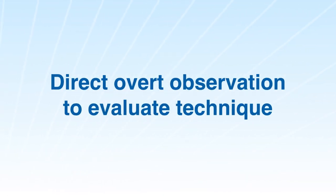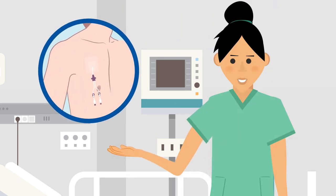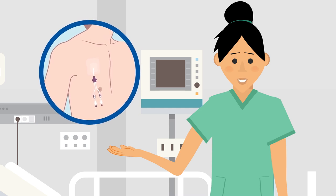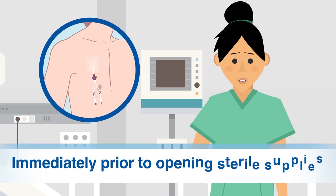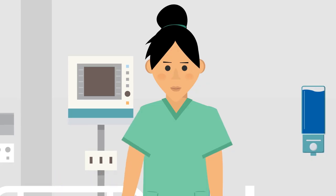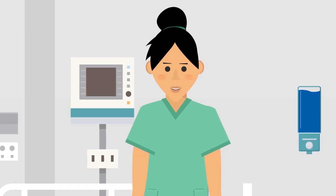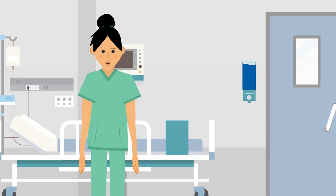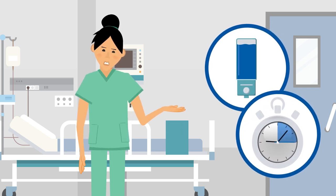Direct overt observation occurs when the person conducting the observation and the person being observed are known to one another. For example, when hand cleaning is included in a central line insertion checklist, the person completing the checklist watches and ensures that the person inserting the central line has cleaned their hands immediately prior to opening sterile supplies. Direct overt observation can also be used to evaluate hand cleaning techniques of personnel during demonstrations of skill. Techniques to evaluate include observing for the full coverage of hands with alcohol-based hand sanitizer, or that hands are scrubbed for a full 15 seconds during hand washing.